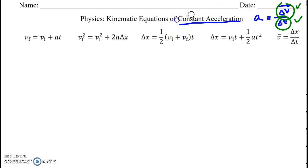There are four equations of constant acceleration. All of these equations indicate that there's acceleration happening. When you accelerate, you change your velocity. You might start at some initial velocity vi and end at a final velocity vf.